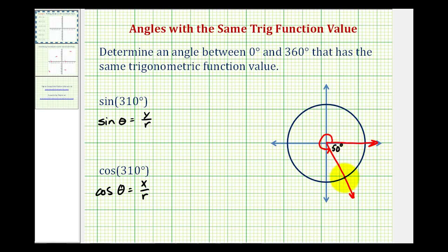This point of intersection can be used to determine the trig function values. Notice how the x coordinate would be positive and the y coordinate would be negative. The radius of the circle would be the length of this segment here.